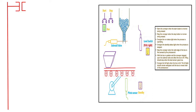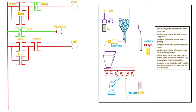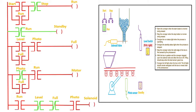So how does the ladder diagram look like? I will be drawing it right away and start explaining now. If you carefully observe, we have start and stop push buttons, a run indicator light for the starting process, a standby light whenever the process comes to a halt, a solenoid valve for this particular scenario, a level sensor switch indicated as 'level', a photosensor indicated as 'photo', and the motor. These are the five different rungs used with their respective contacts.